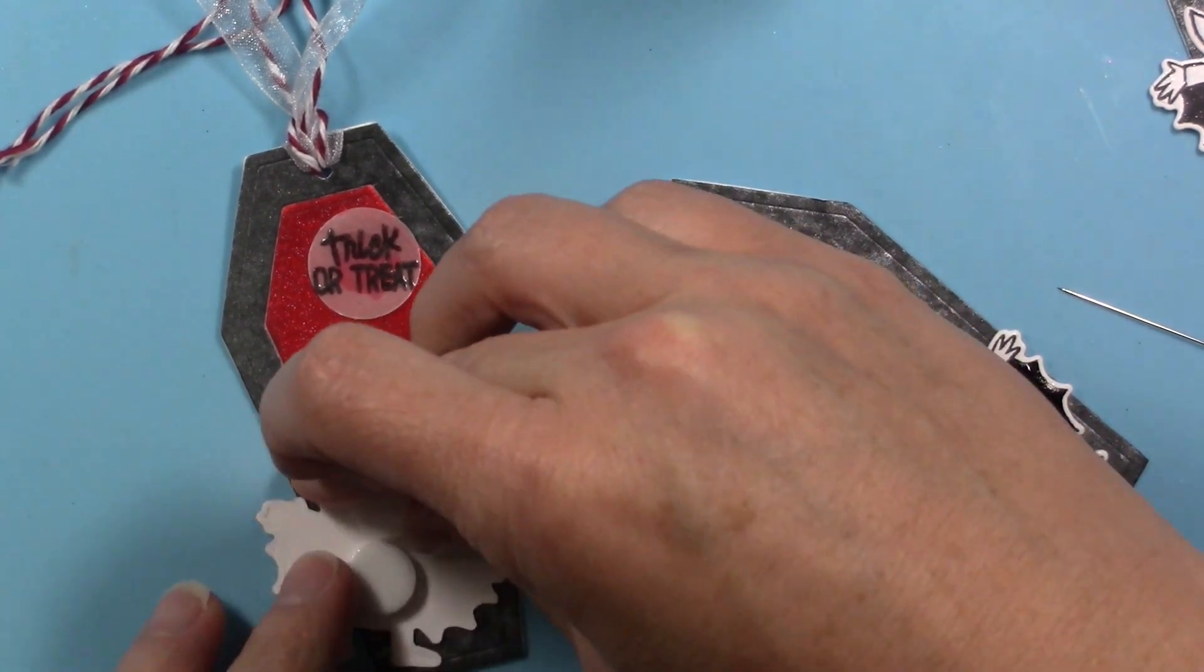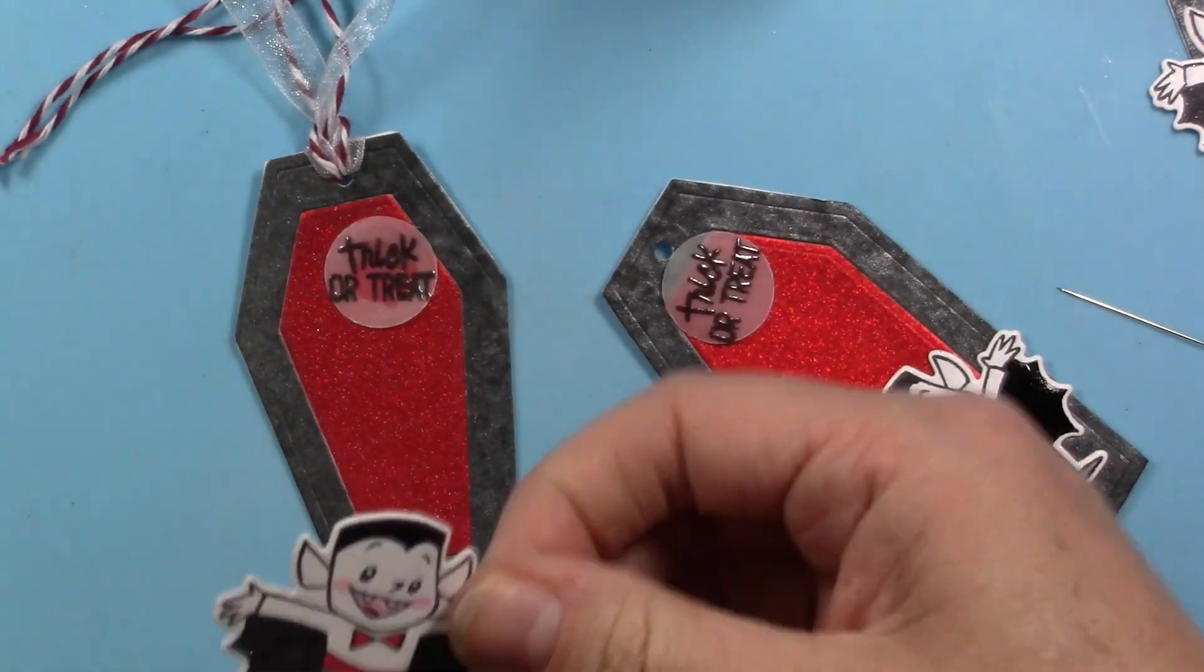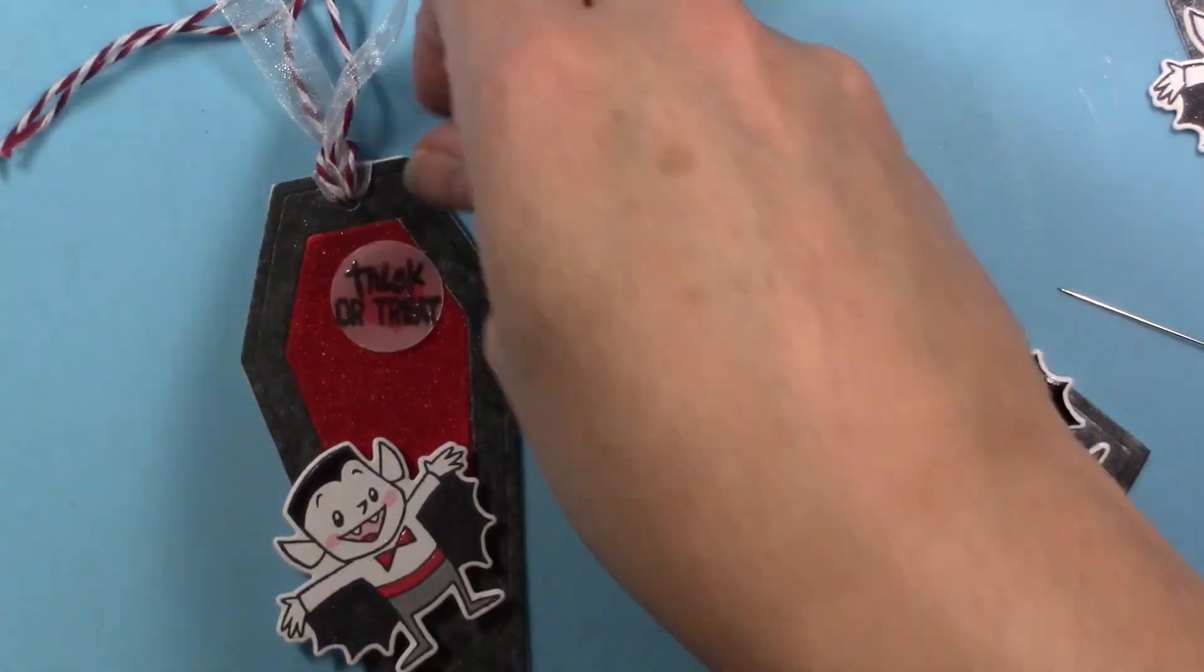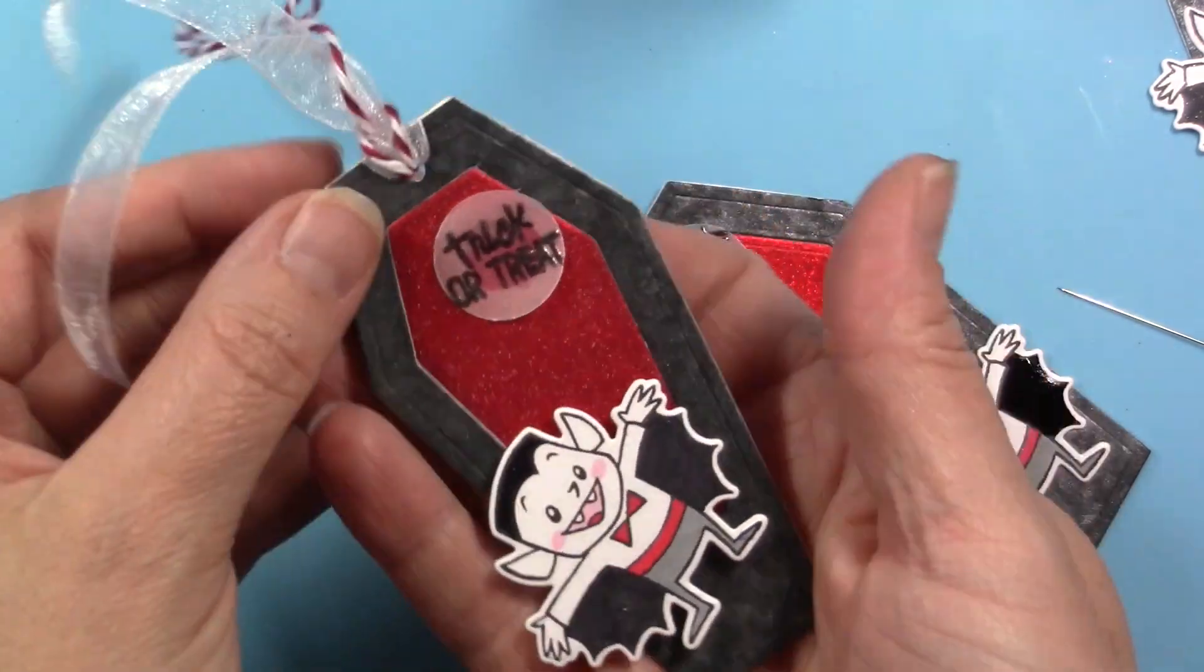Then I will take some foam dots—if you have Wobbles I would suggest using those for these little guys too, that would be super cute—and I adhere them, and I have a finished tag.